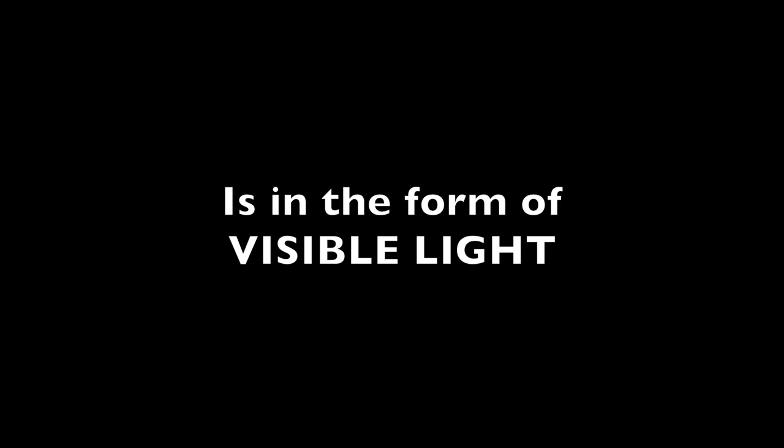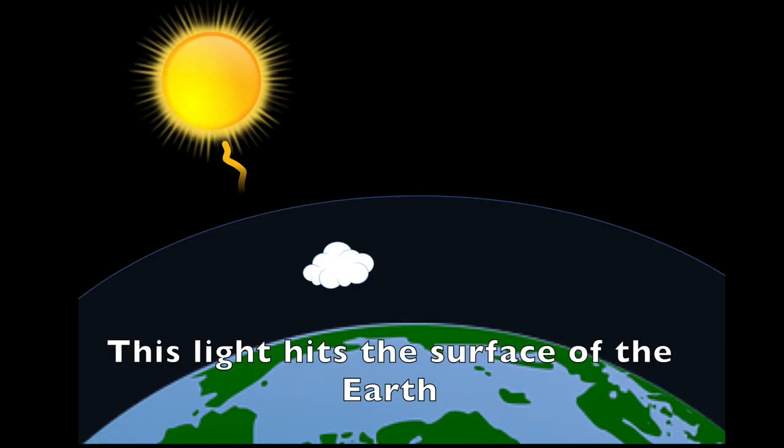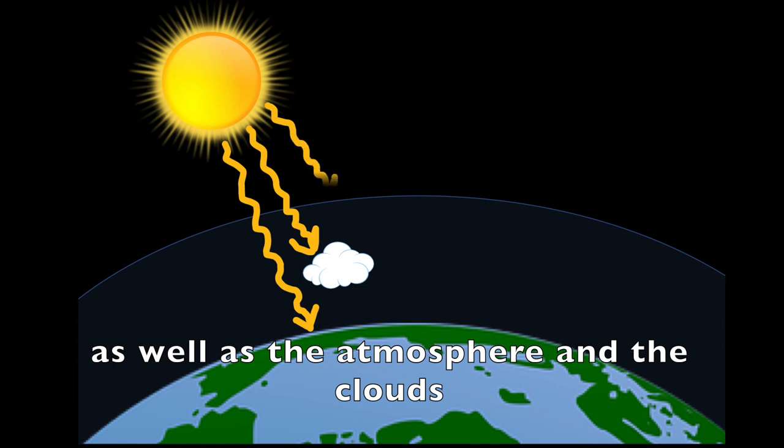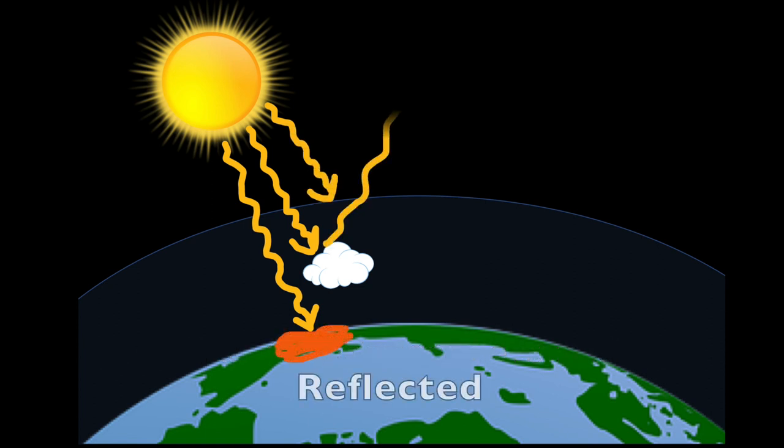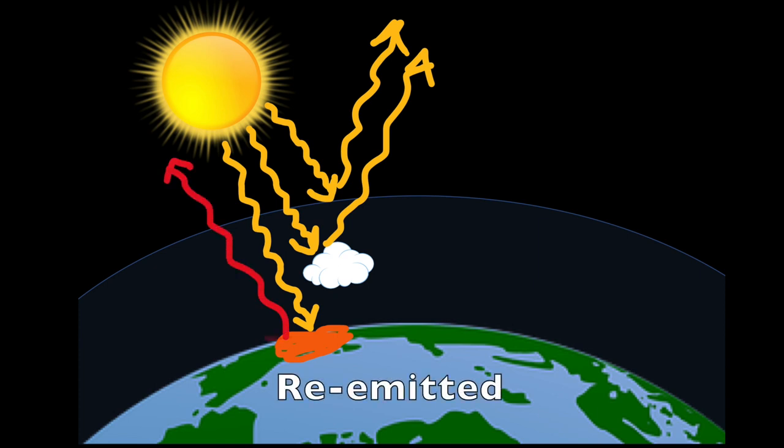Most of the radiation coming into the earth system is in the form of visible light which we can see and ultraviolet light which we cannot see. This light hits the surface of the earth as well as the atmosphere and the clouds and when it does it can get absorbed or reflected or re-emitted.